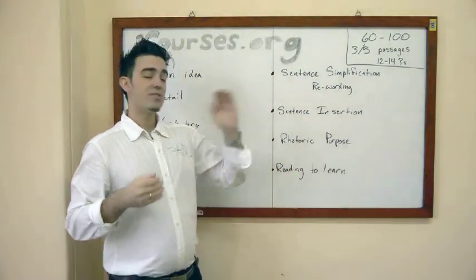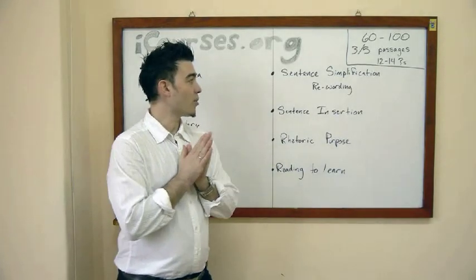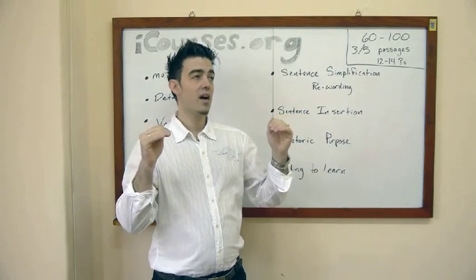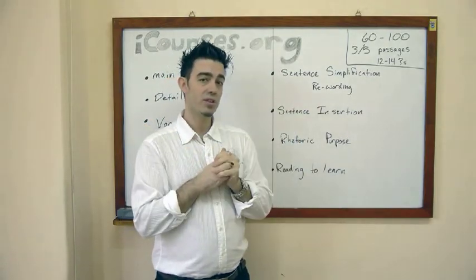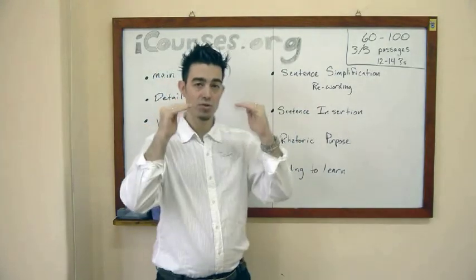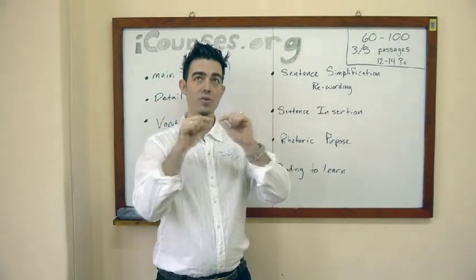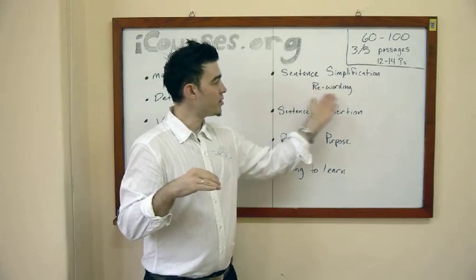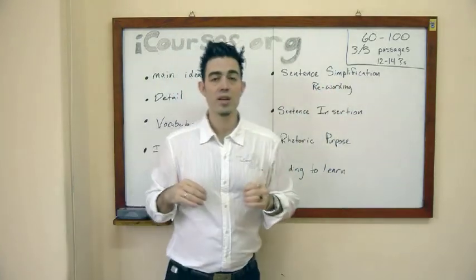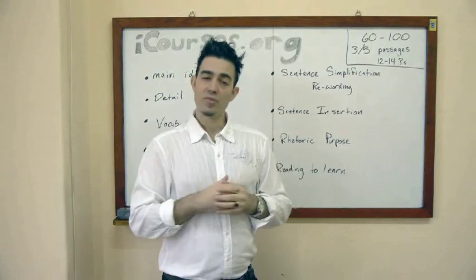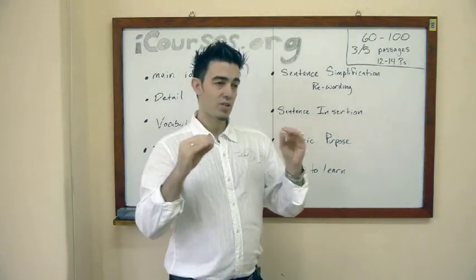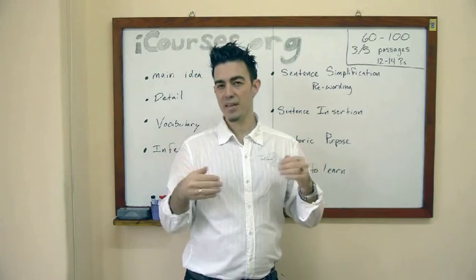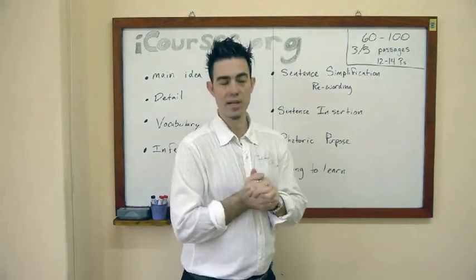Another one, the sentence simplification and rewording. This is one where they give you a sentence from the text. They'll tell you exactly where to look on the text, and then they give you some options of how you can say that sentence in a different way. So it's basically rewording and simplification. You have to look at the specific information in the sentence. They try to trick you a little bit with giving you options that may sound correct, but sometimes they have the opposite meaning.